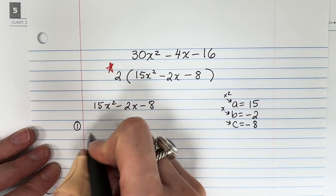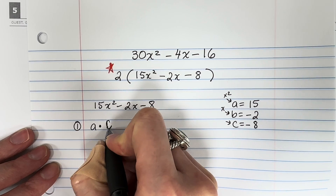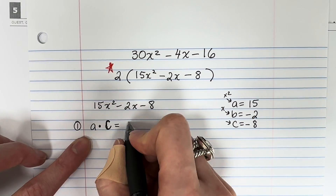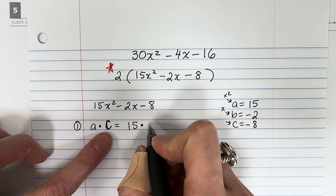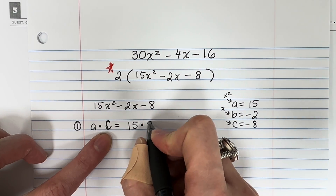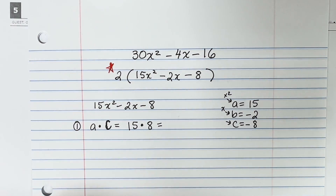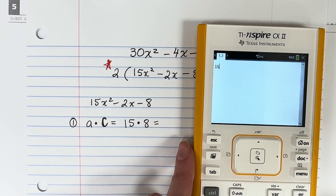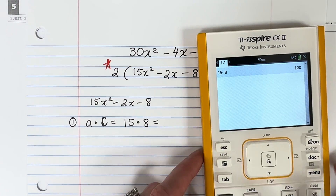The first thing we're going to do is A times C. A is 15 times C — let's ignore the sign for now — is 8. Let's put that in the calculator: 15 times 8 is 120.